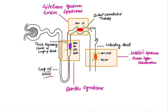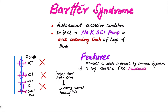This is the basic structure of the nephron. This is the loop of Henle, and this is the ascending limb of the loop of Henle. This is the sodium-potassium-2-chloride co-transport pump. In Bartter syndrome, there is a defect in the sodium-potassium-2-chloride co-transport pump. Bartter syndrome is an autosomal recessive condition, and the features mimic a state induced by chronic use of a loop diuretic.